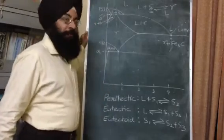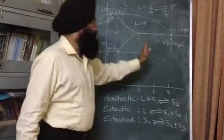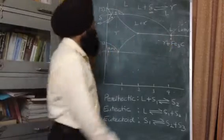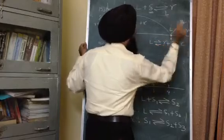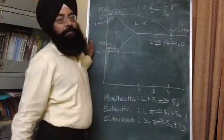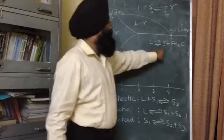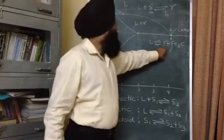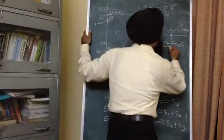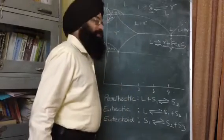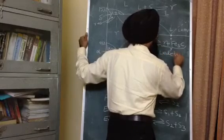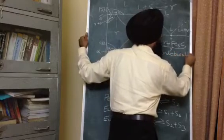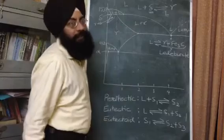These two solids are gamma austenite plus Fe3C (cementite). So the liquid changes to austenite and cementite. This is the eutectic reaction that takes place in the iron-carbon diagram. This eutectic mixture of gamma austenite plus cementite is known as ledeburite. So ledeburite is the eutectic mixture of austenite and cementite.